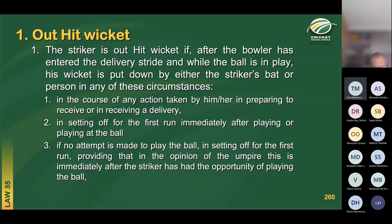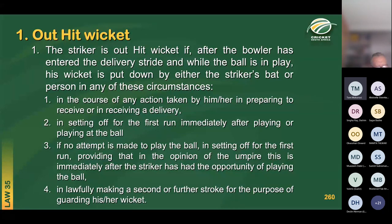The third instance is if no attempt is made to play the ball, again in setting off for the first run, provided the umpire considers the striker set off immediately after the opportunity of playing the ball. Lastly, in lawfully making a second or further stroke to guard the wicket — if the ball is rolling towards the stumps and the striker tries to hit it away but instead hits the stumps — the striker will be out hit wicket.